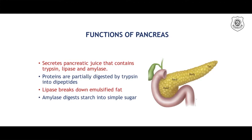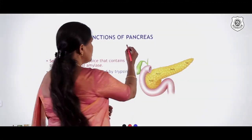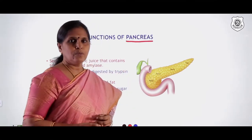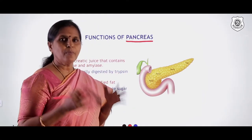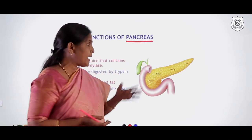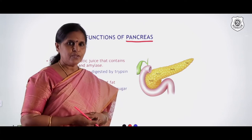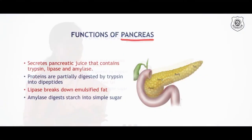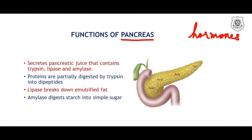Pancreas is another important organ. Notably, diabetes is a disorder that occurs when the pancreas is not working properly. Apart from digestion, the pancreas secretes hormones — insulin and glucagon.